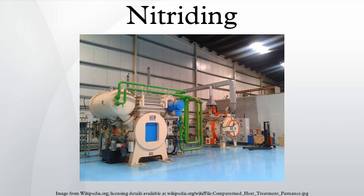In gas nitriding, the donor is a nitrogen-rich gas, usually ammonia, which is why it is sometimes known as ammonia nitriding. When ammonia comes into contact with a heated workpiece it dissociates into nitrogen and hydrogen. The nitrogen then diffuses onto the surface of the material creating a nitride layer. This process has existed for nearly a century, though only in the last few decades has there been a concentrated effort to investigate the thermodynamics and kinetics involved.